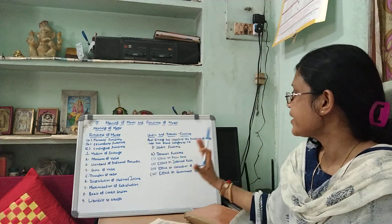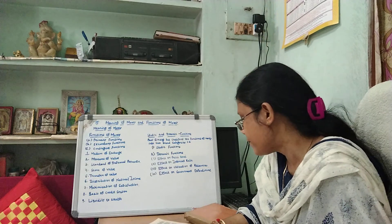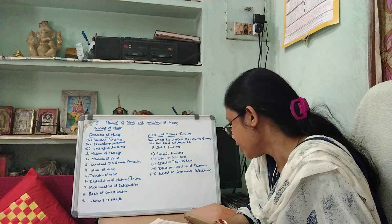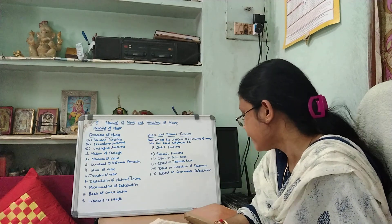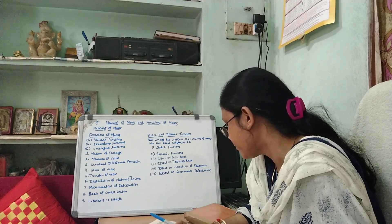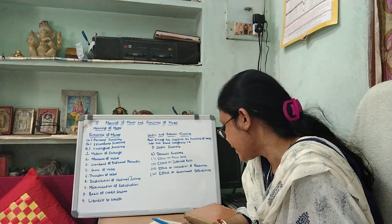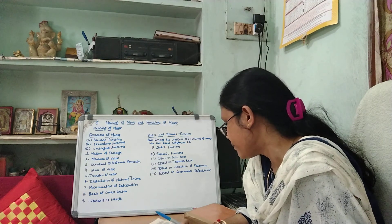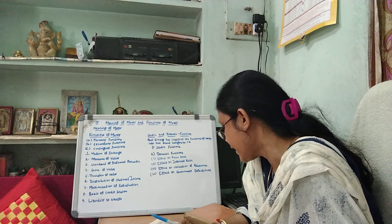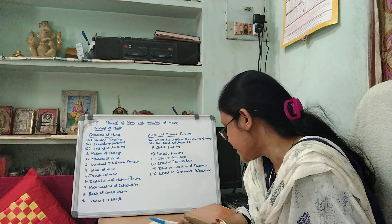Then I will discuss about the static and dynamic functions of money. Static function: in the static function, money acts as a passive or technical tool to ensure smooth working of the economic system. It does not have an active influence on economic activities. The traditional functions of money — medium of exchange, measure of value, standard of deferred payments, and store of value — are all static or technical functions, that is, money as a medium of the price mechanism.